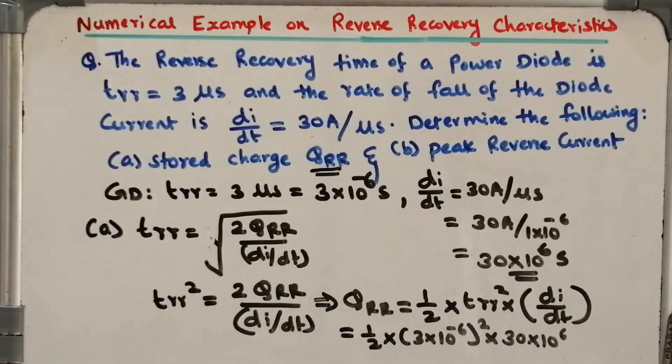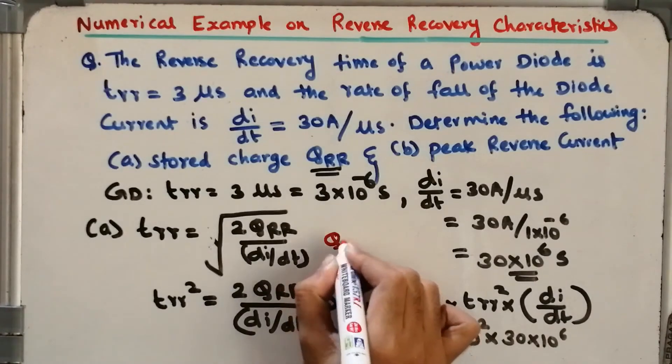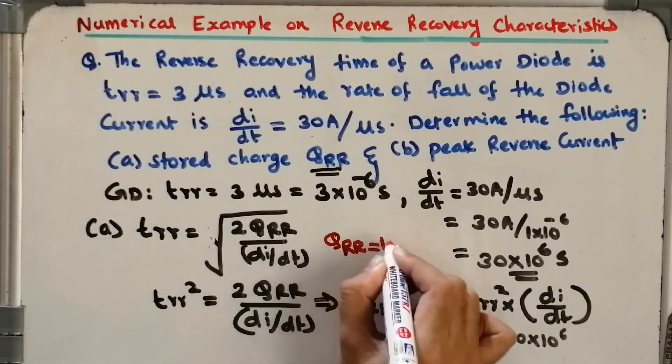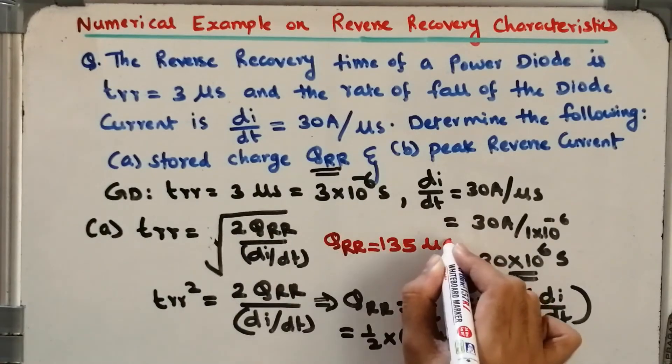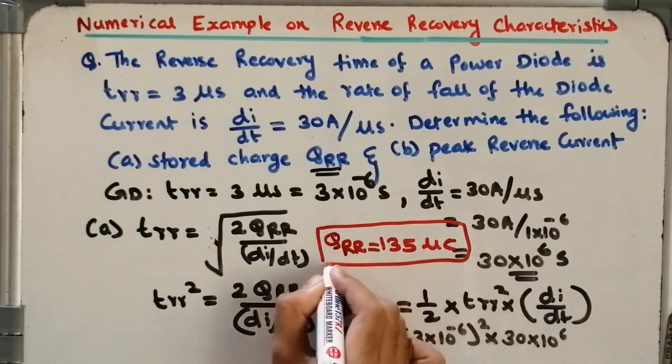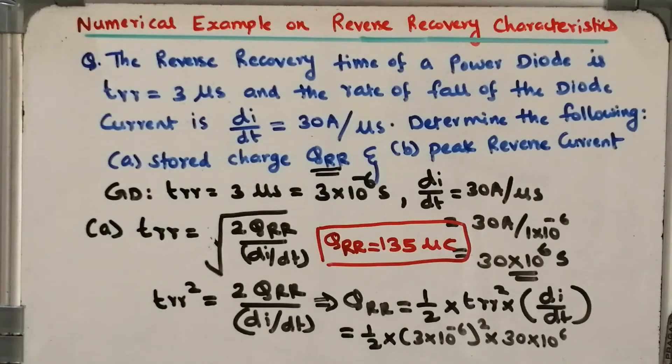Finally I will be getting the amount of QRR equal to 135 microcoulomb. So the answer is QRR equals 135 microcoulomb. So this is the answer for QRR, 135 microcoulomb.